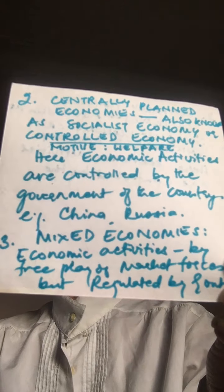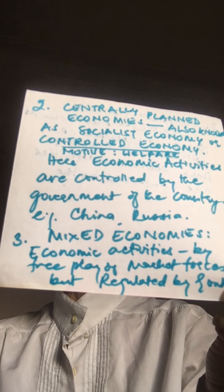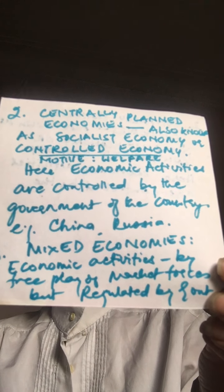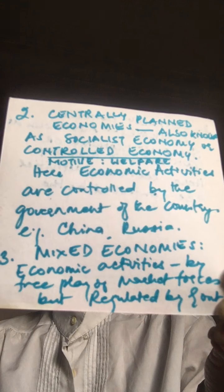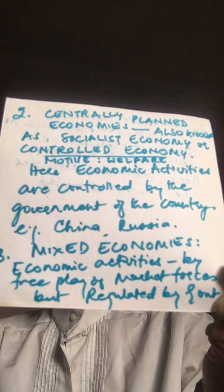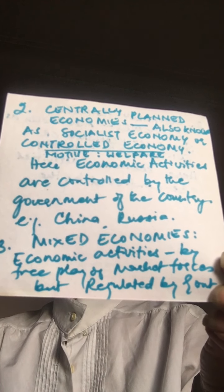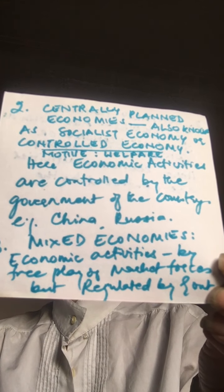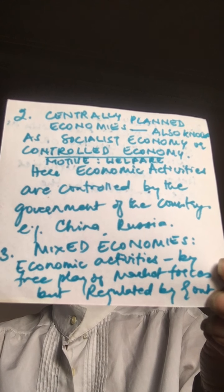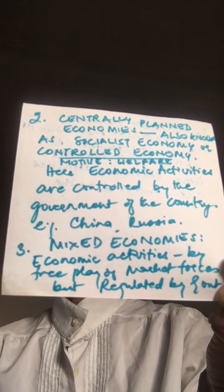The third type is the mixed economy. These are economies where there is a little free play of market forces, but they are regulated by the government. Economic decisions are driven by both profit maximization and social welfare. The consumer is sovereign to some extent, because resources are controlled both by the government and by the people. Prices are determined by the market, but the government regulates and controls prices of essential commodities. Both the public and private sectors dominate.